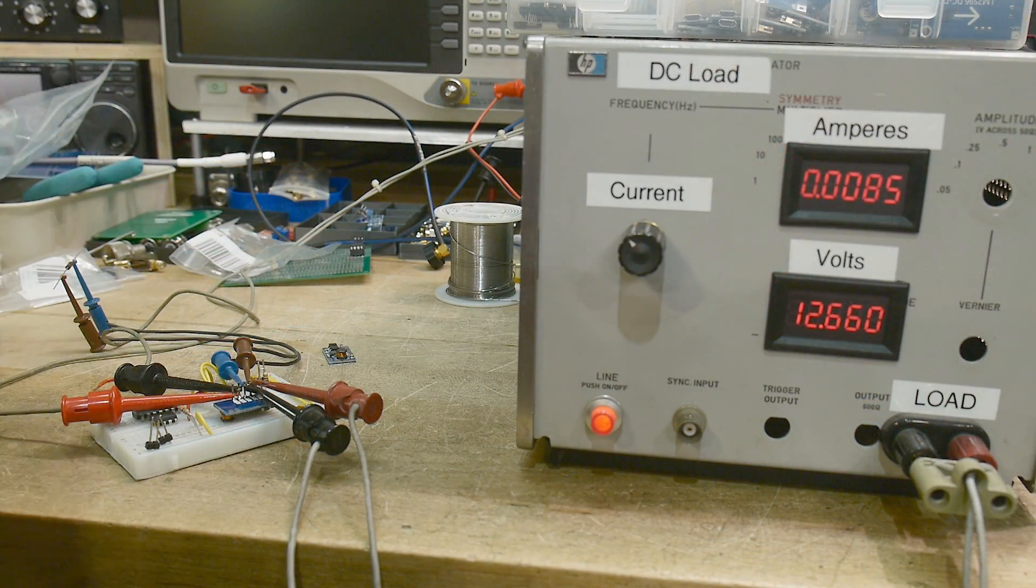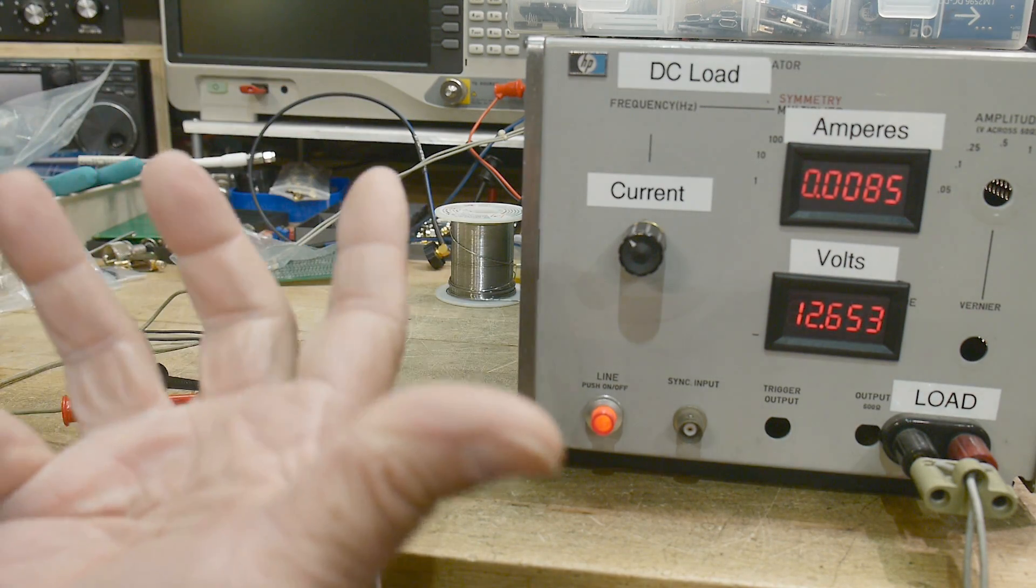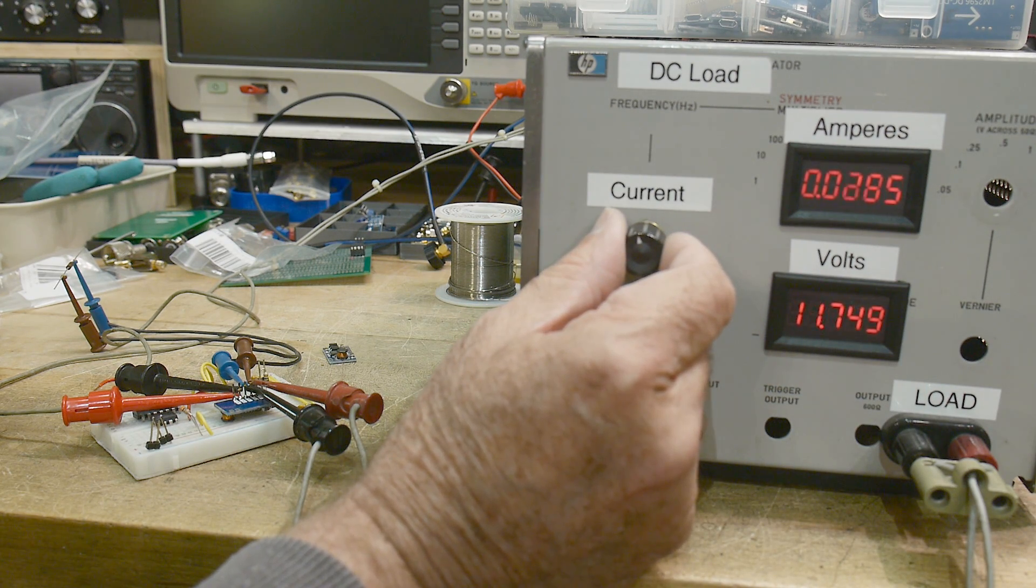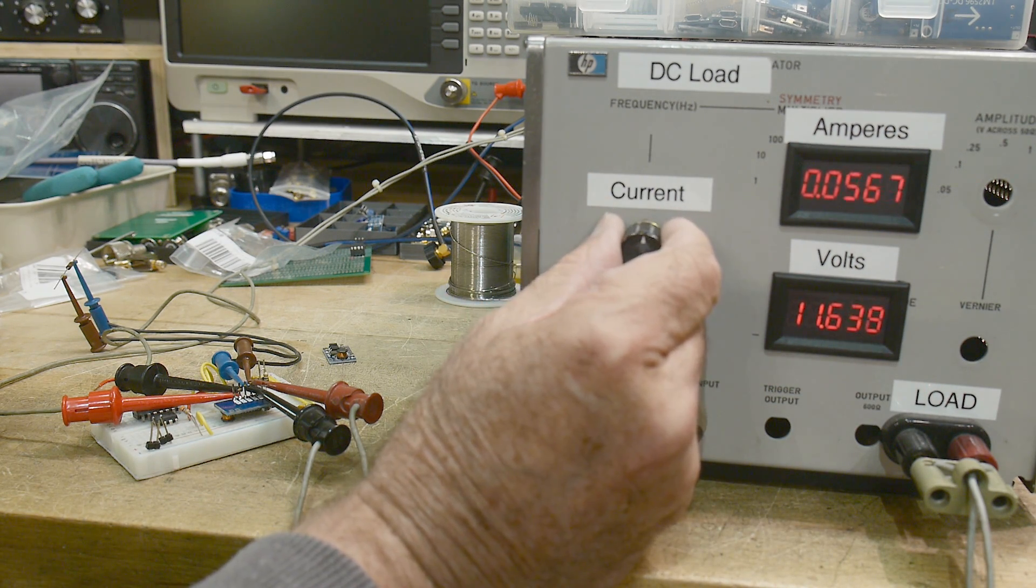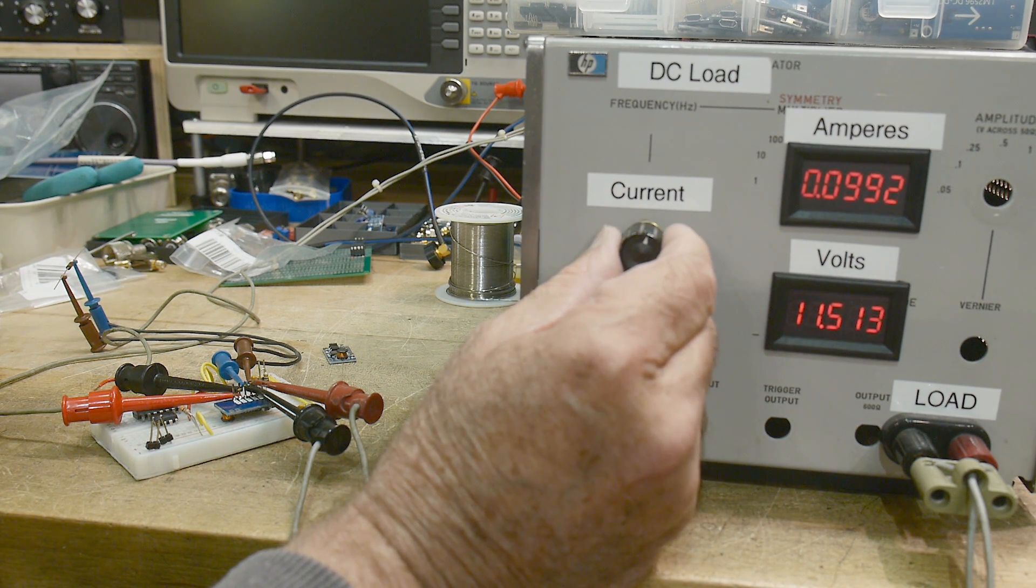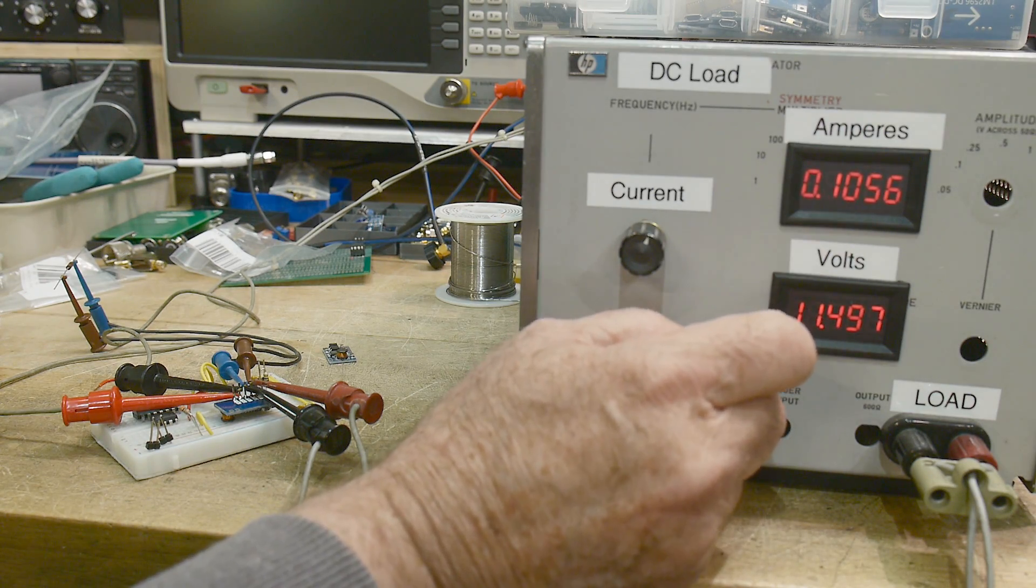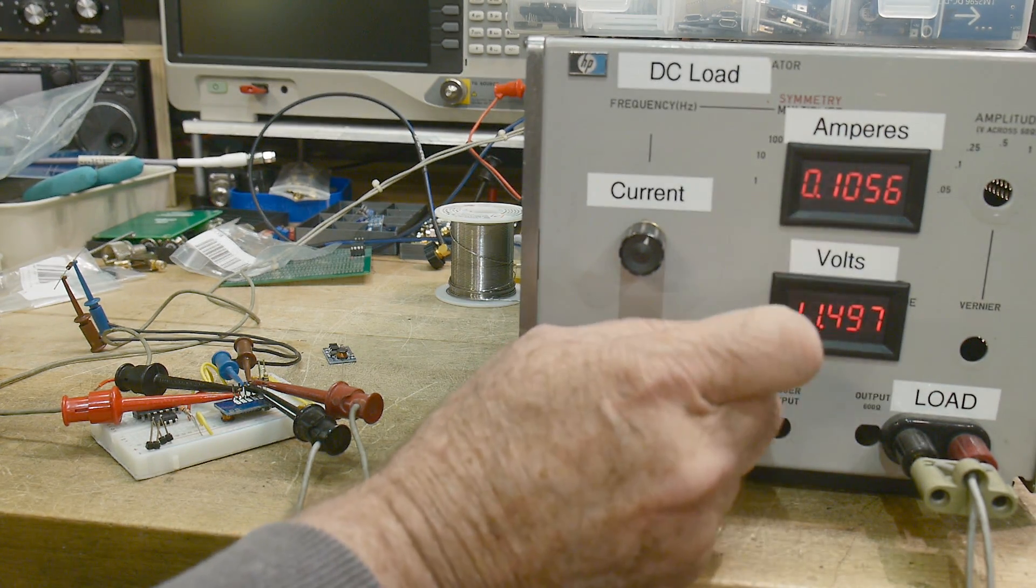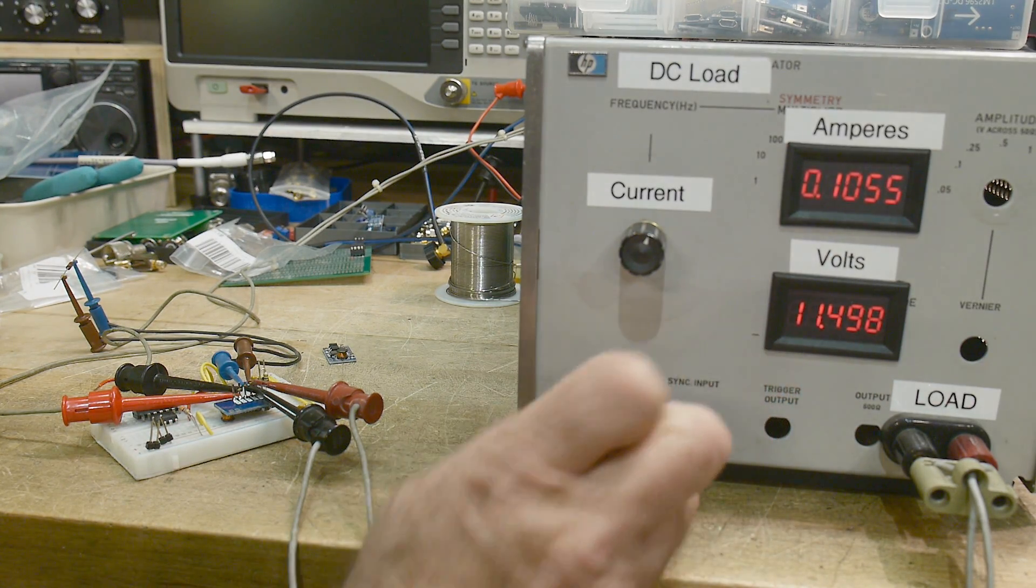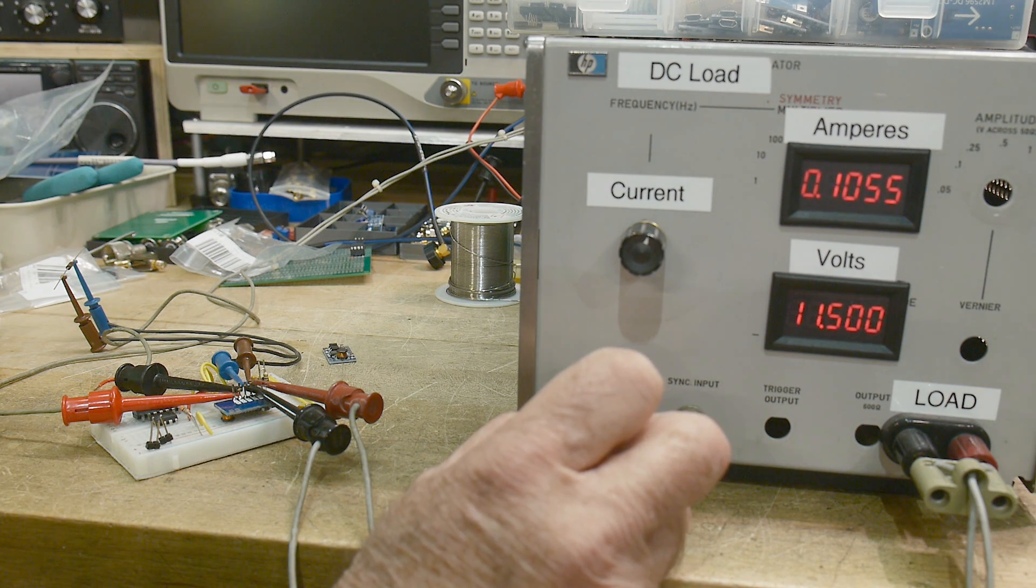All right. So I put 120 ohms on the plus 12. So we're drawing 100 milliamps out of there. And now we're looking at the minus. So let's draw some current out of the minus. And let's go to 11 and a half, 100 milliamps. So if we have 100 milliamps on one side, 100 milliamps on the other side, it goes down to 11 and a half. So yeah, it's not so bad. I expected worse. So yeah, that's doing all right.